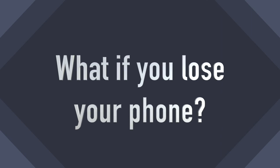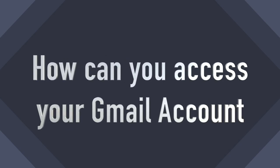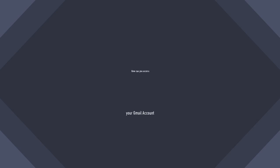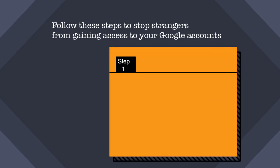Thanks for trying two-step verification, and kudos for taking extra steps to protect your account. What happens if you lose your phone and two-step verification is turned on? You can follow these steps. First, revoke your current application-specific password. If you have a smartphone with apps linked to your Google account, they will automatically be signed out.